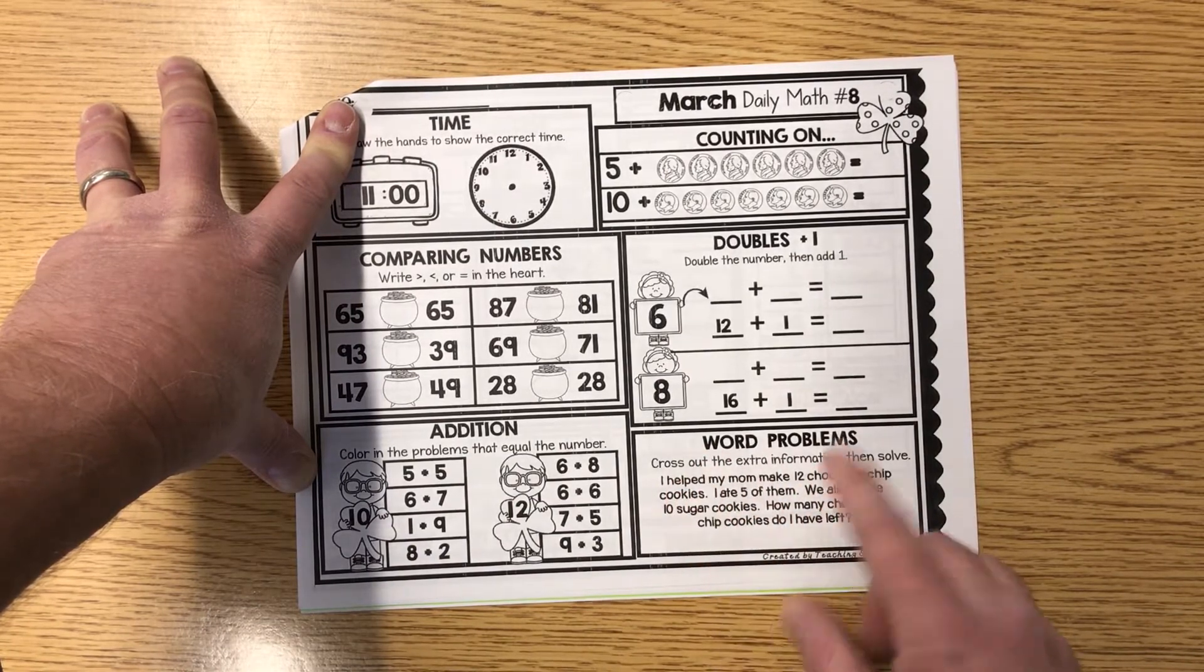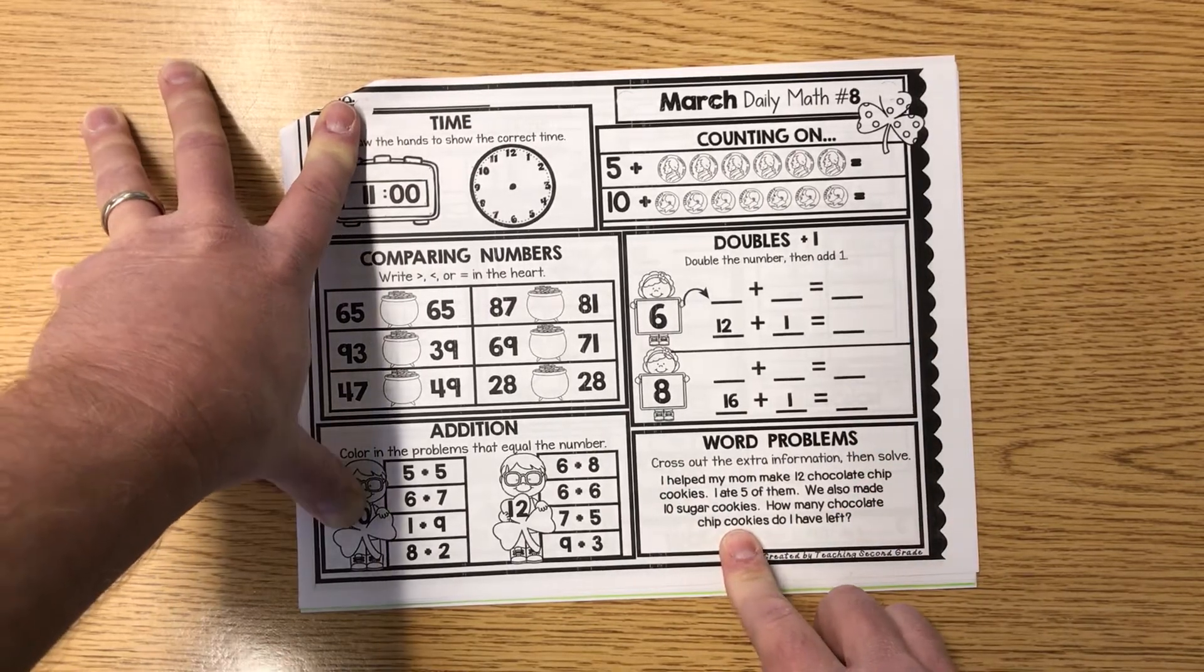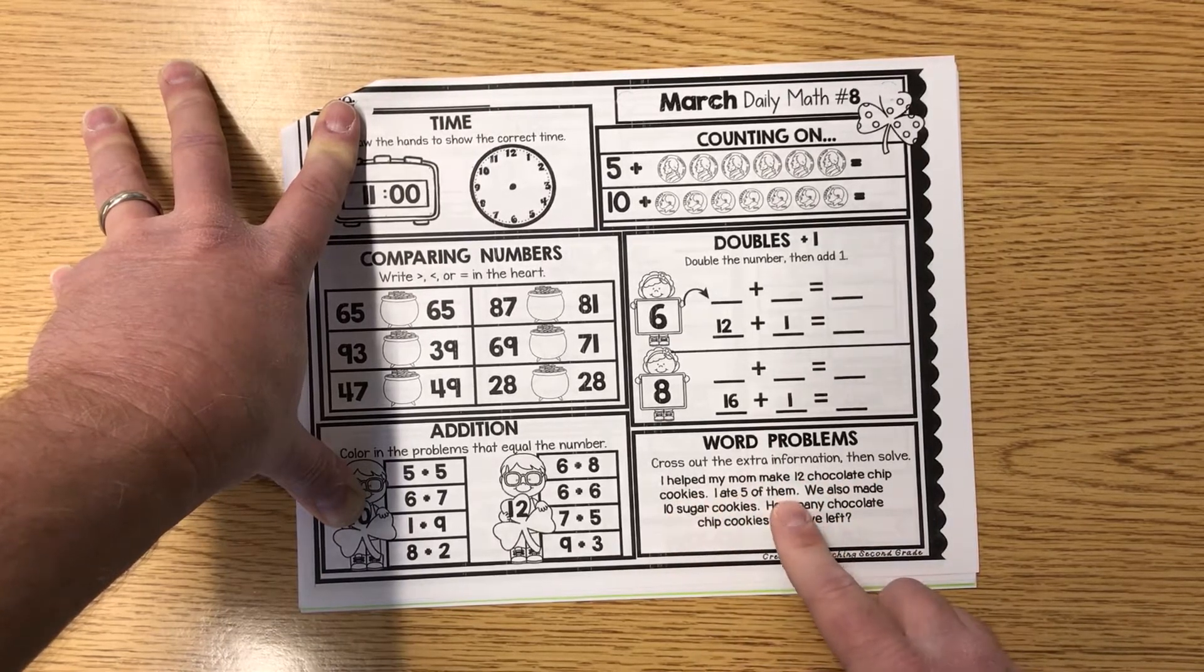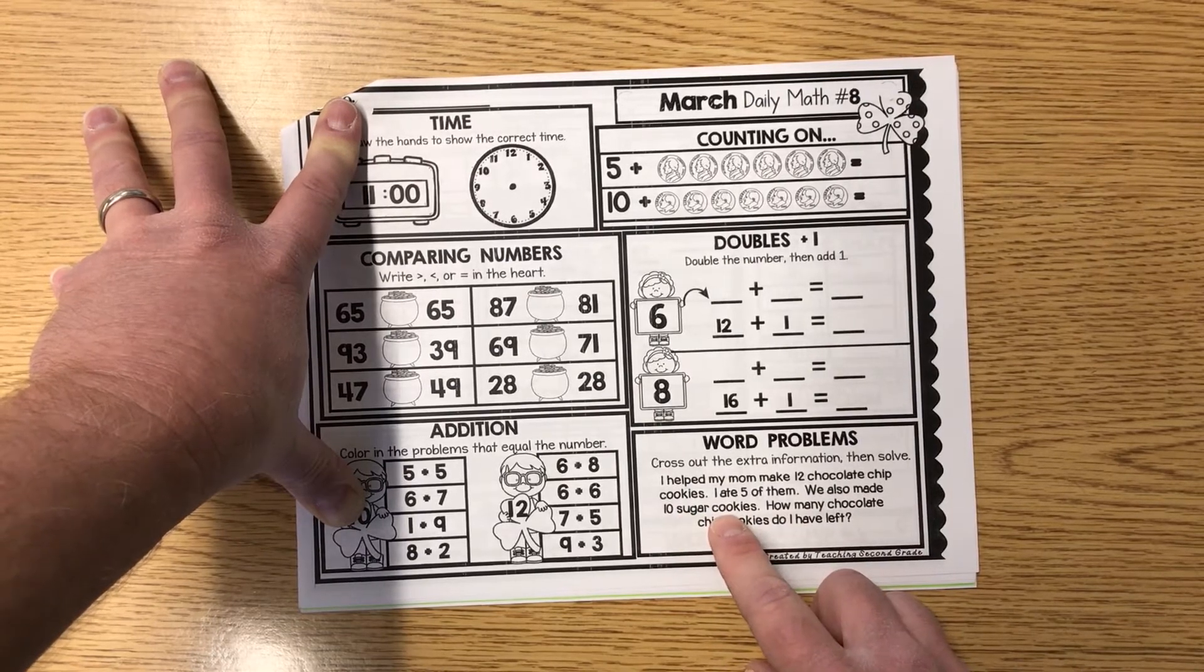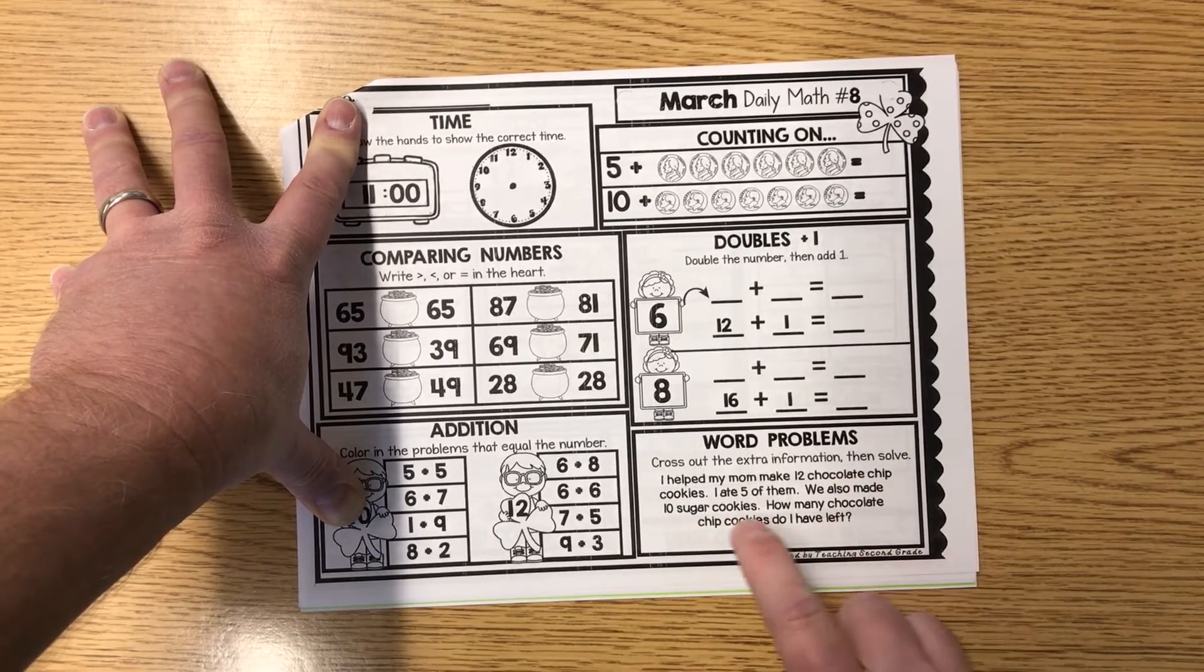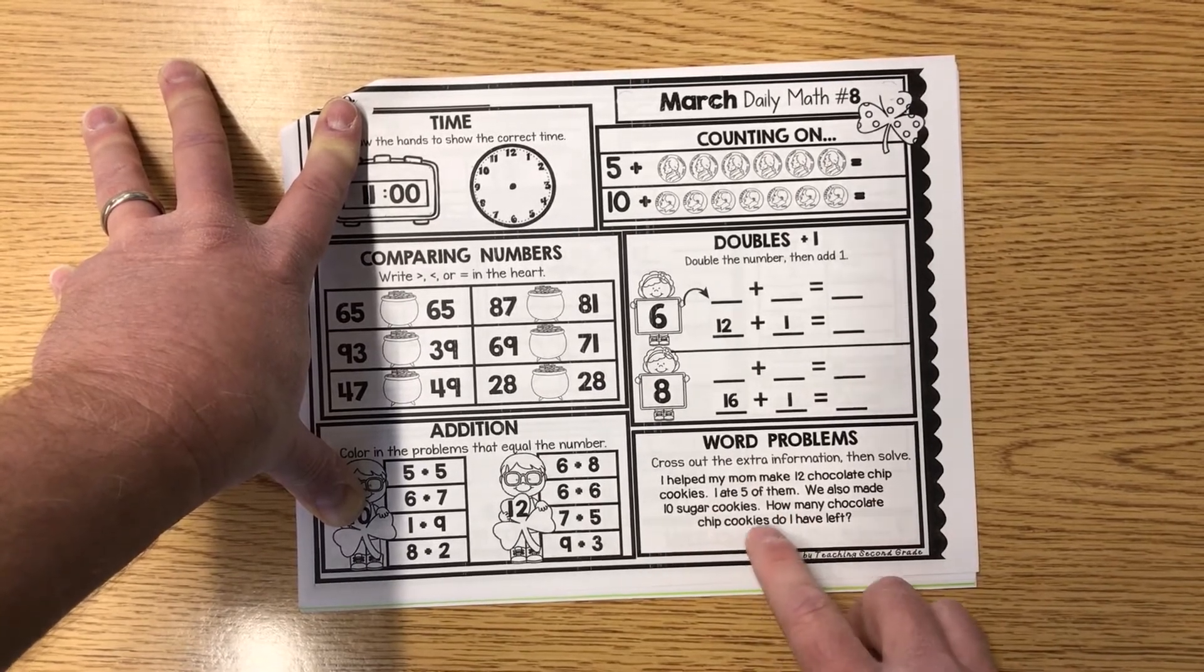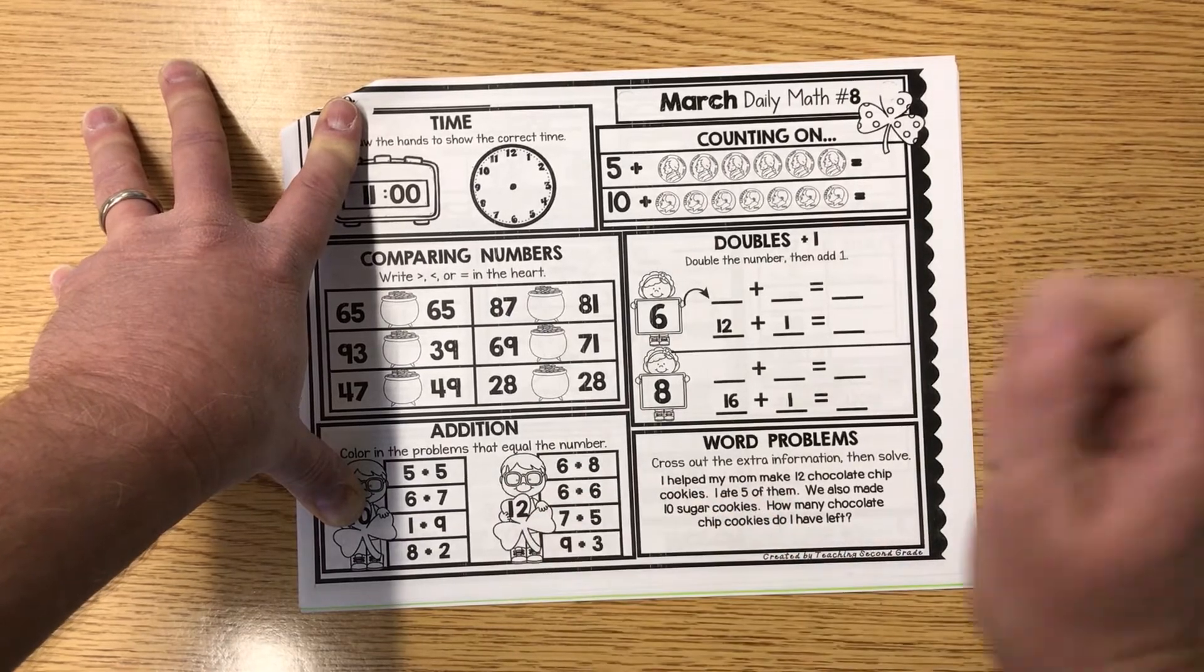Cross out the extra information, then solve. We're talking about chocolate chip cookies. I helped my mom make 12 chocolate chip cookies. I ate 5 of them. We also made 10 sugar cookies. Sugar cookies - who cares? We're looking for chocolate chip cookies. Do you think they're trying to trick you guys? I do. Because here's your question: how many chocolate chip cookies do I have left? So get rid of sugar cookies, cross it out.